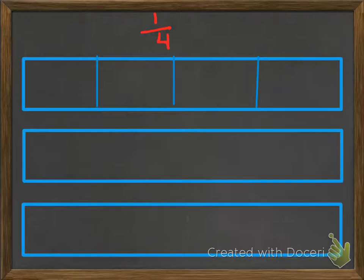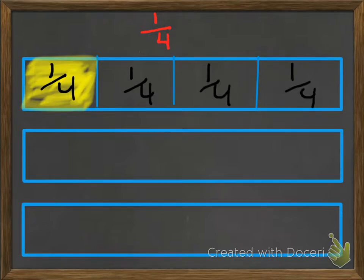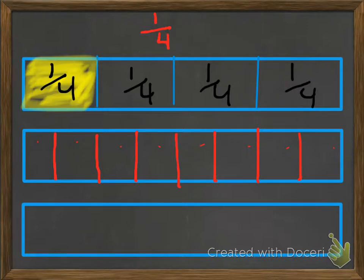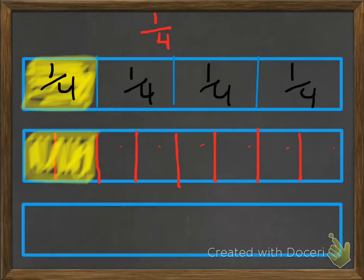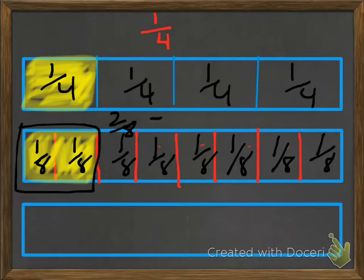Alright, how'd you do? For one fourth, that would be this section right here. We can label each section one fourth — all of these are one fourth. Now let's cut the second one in the same place so we still have our fourths, then cut each piece right in half. Now we have eight parts. We shade in the same amount of space, and we get two eighths. So two eighths is the same as one fourth.